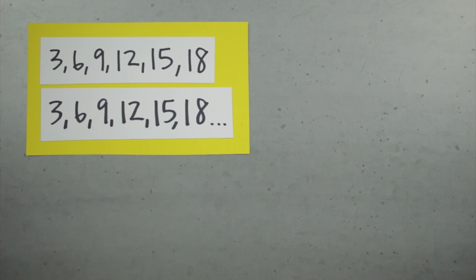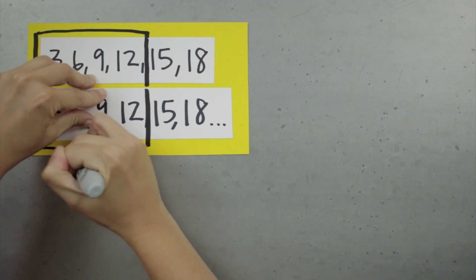On the other hand, you can find the partial sum of both finite and infinite sequences because a partial sum is just the sum of a finite number of terms. It's the sum of part of a sequence, and for that reason, it's often called a finite series. So this is a finite sequence of the multiples of 3 and an infinite sequence of the multiples of 3.